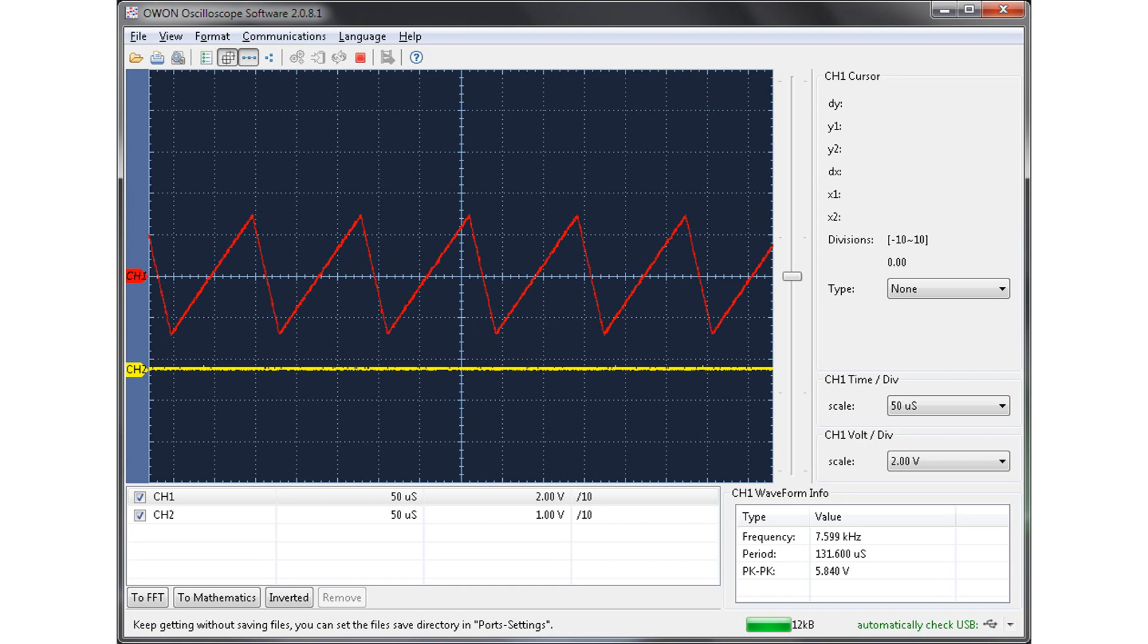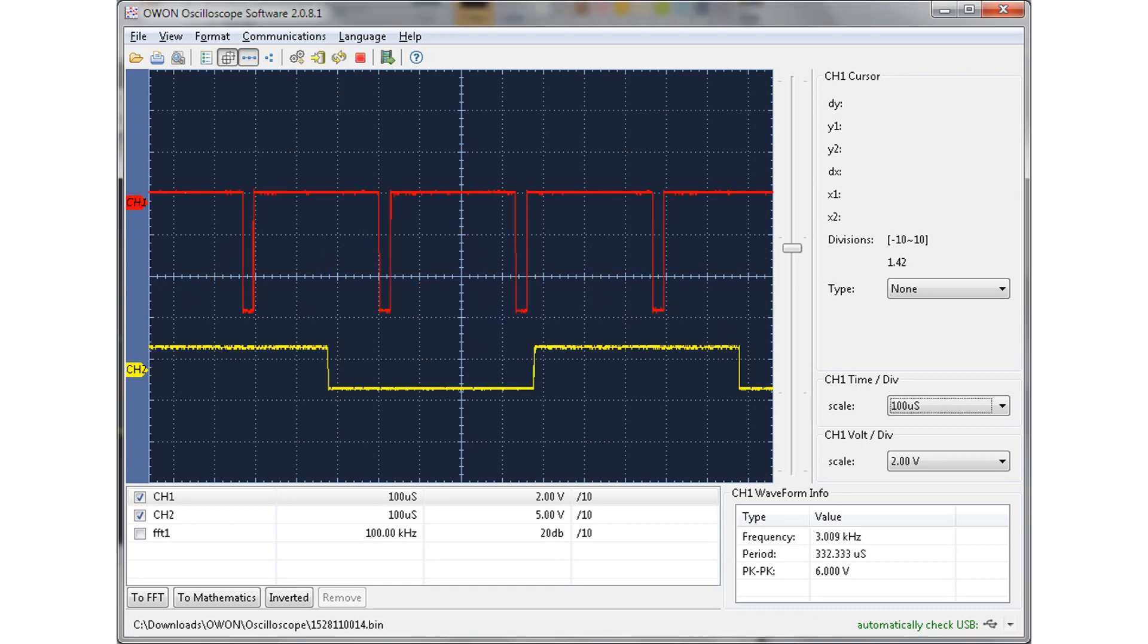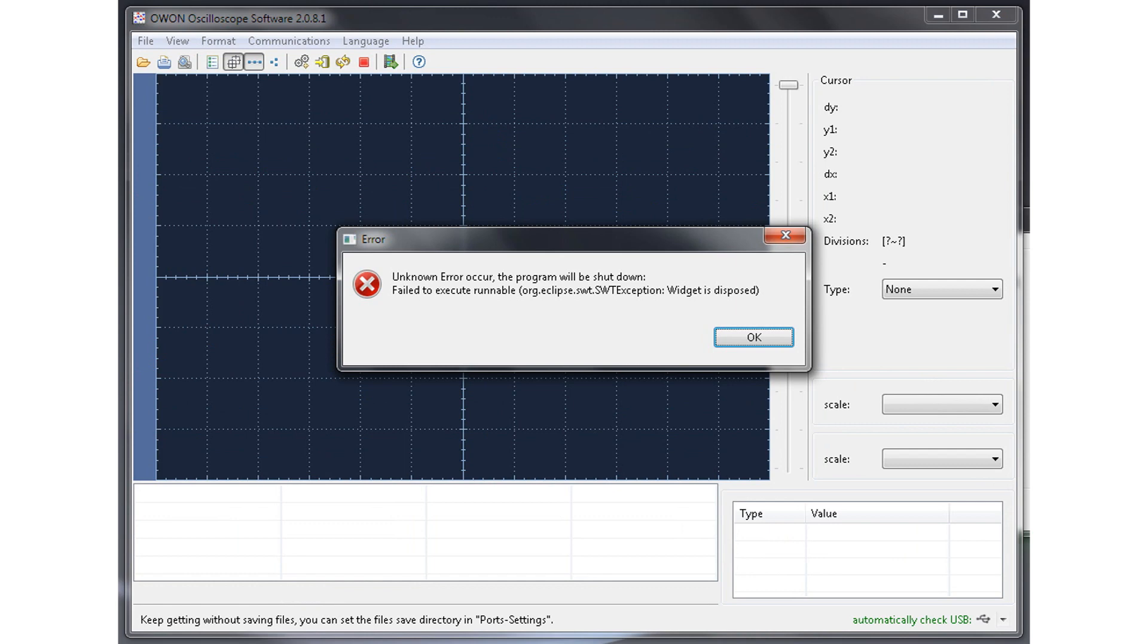Another way you can remotely view signals is via USB, using OWEN's software. Now I found the software to be really basic, no interesting features beyond viewing the waveforms, and unfortunately it glitches out sometimes, so I wouldn't depend on this for anything critical.